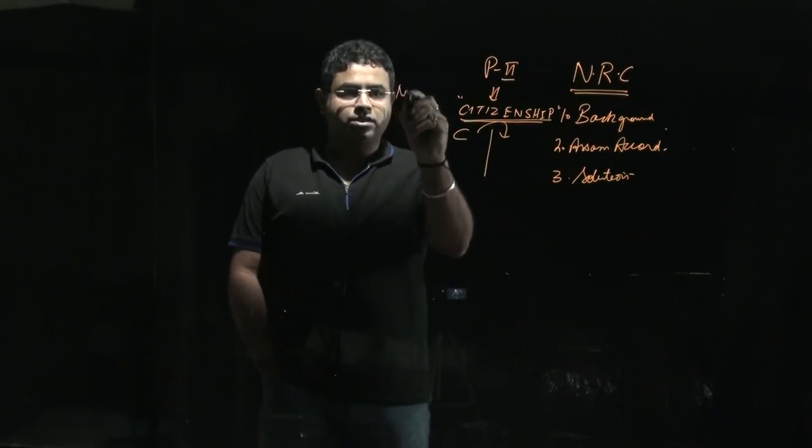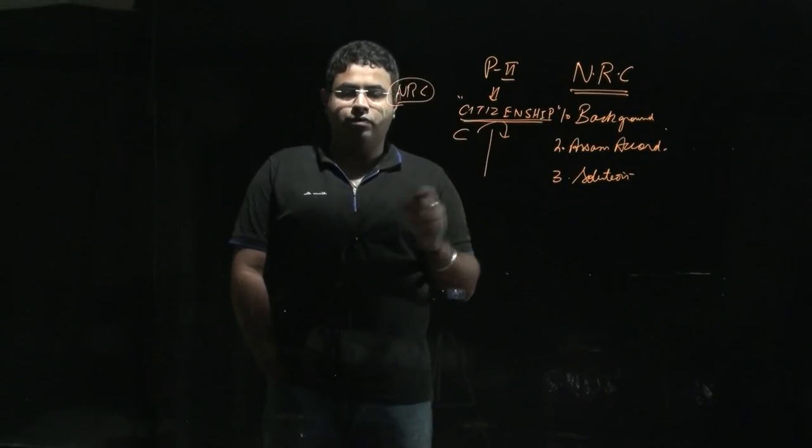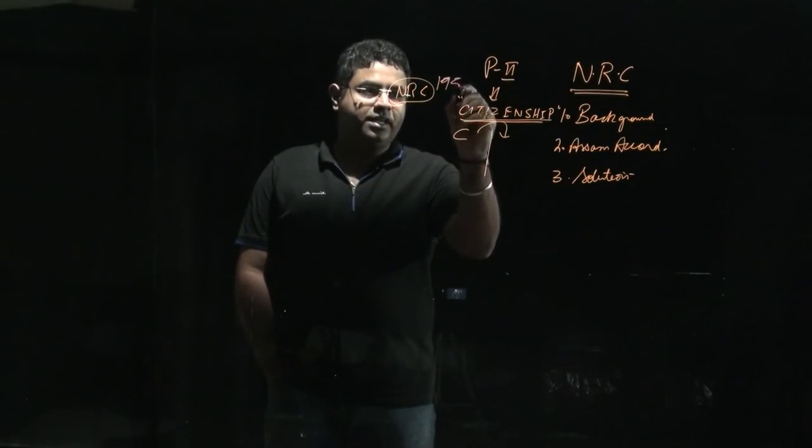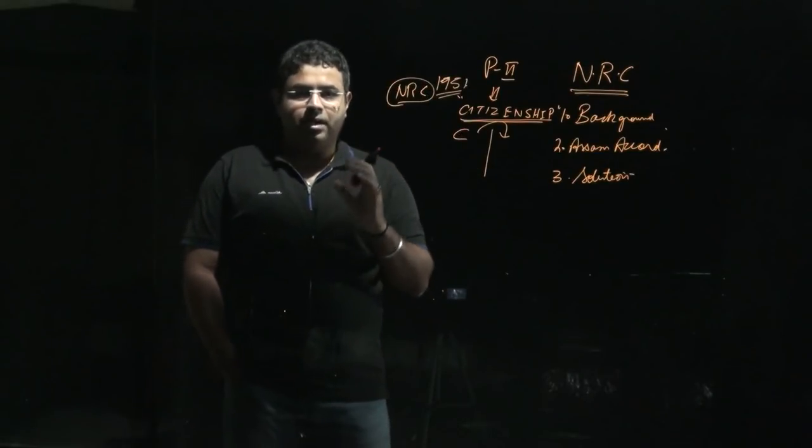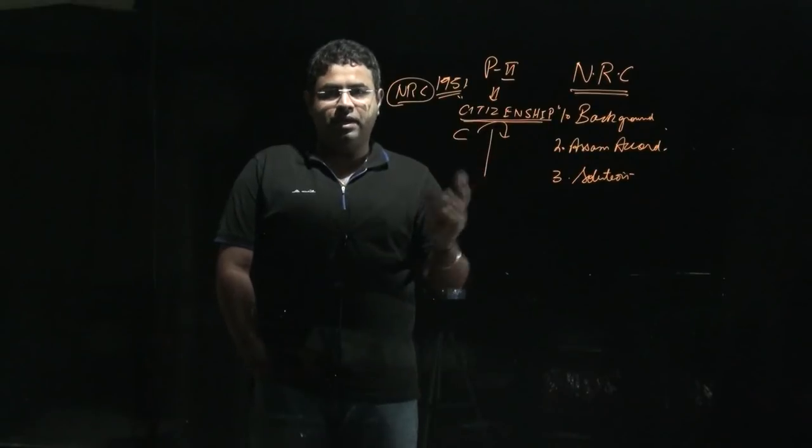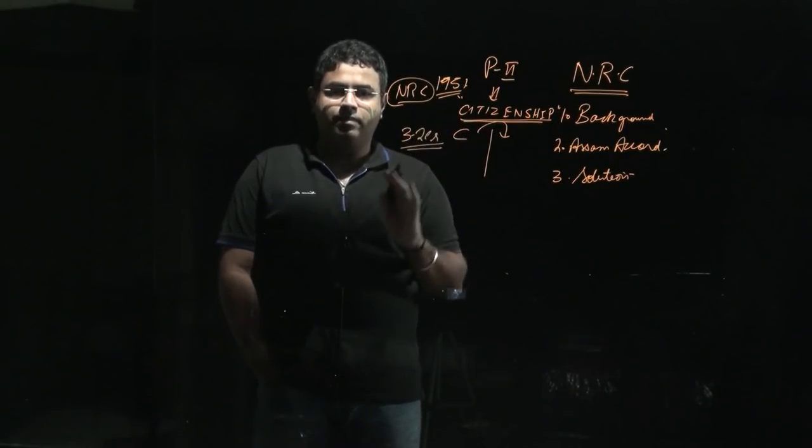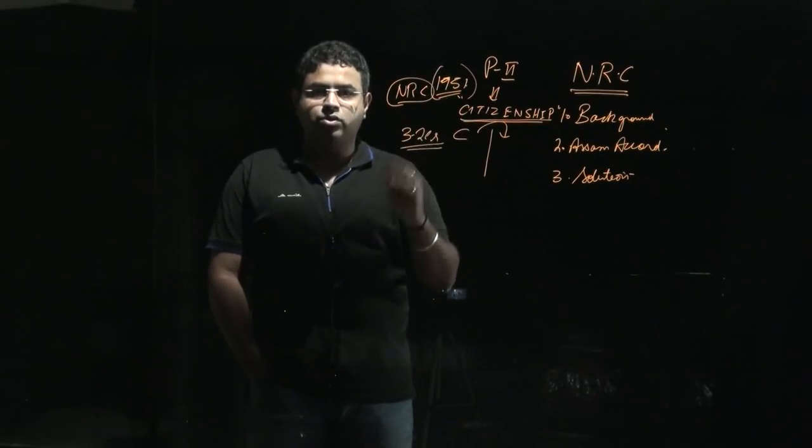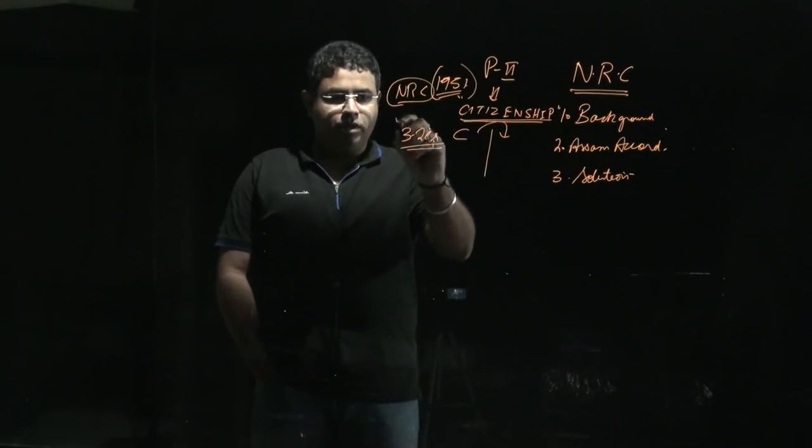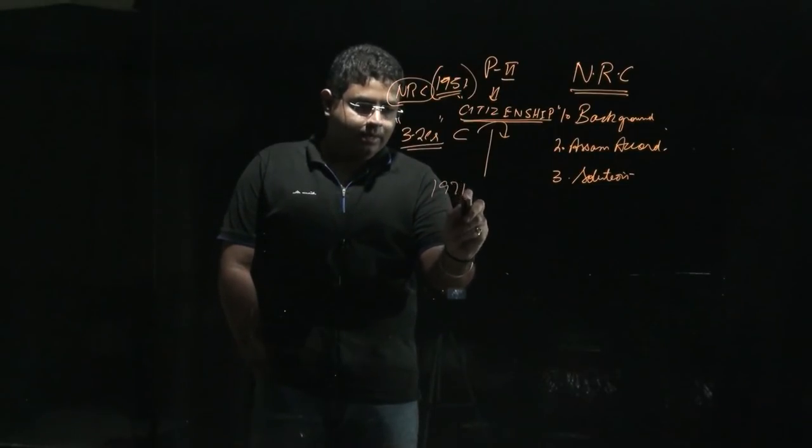Presently, we are discussing the National Register of Citizenship. This contains the names of the citizens of Assam. It was first made in year 1951. Presently in Assam there are about 3.2 crore people living. When India got its independence and we did the 1951 census, the population was quite less in Assam. But because of population growth in India and especially in Assam, the population has increased presently to 3.25 crore.